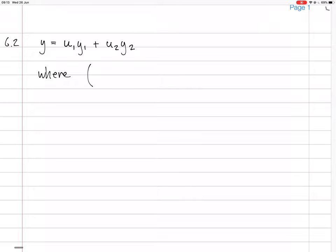This... y₁ dash, y₂ dash... oh sorry, no. y₁, y₁ dash, y₂ dash times by the matrix vector u₁ dash, u₂ dash equals 0, and then you have this f over a thing.